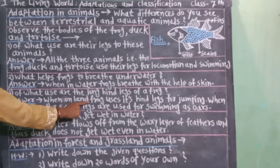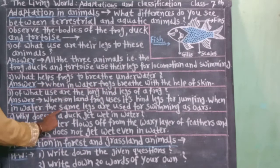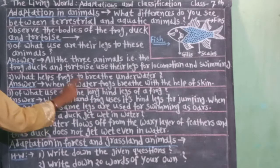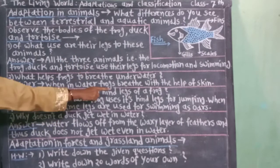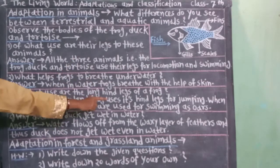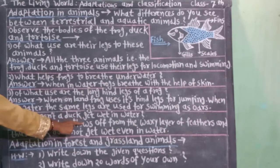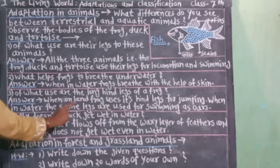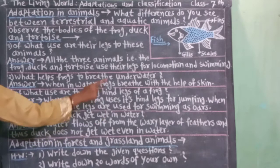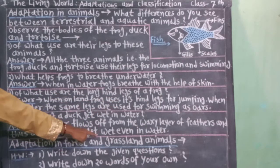Answer: when on land, a frog uses its hind legs for jumping. When in water, the same legs are used for swimming. Then your next question: why doesn't a duck get wet in water? Padak paanya tasthanna ole ka hot nahi? Answer: water flows off from the waxy layer of feathers. And thus, a duck does not get wet even in water.